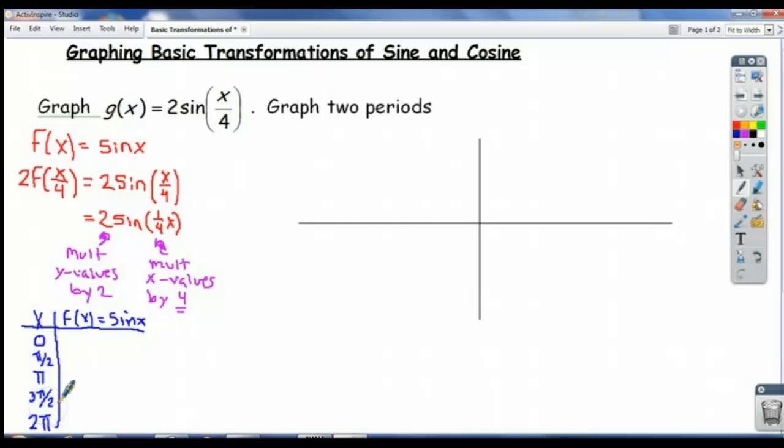We should all know those are the key values we're going to need. And the sine of 0 is 0. We know sine of π over 2 is 1, 0, negative 1, 0.